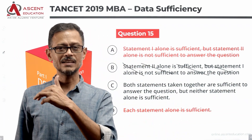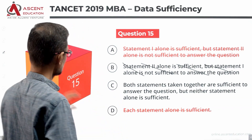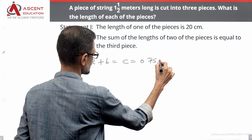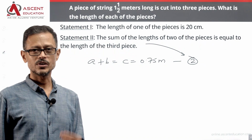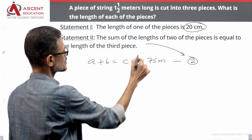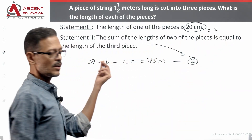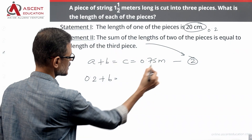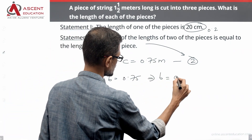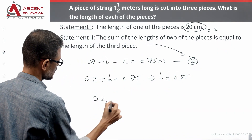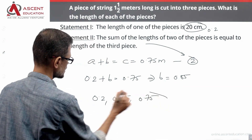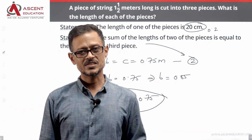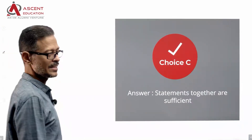Combining both statements: from statement two, C equals 0.75 meters. From statement one, one of the pieces is 0.2 meters — since C is 0.75, A equals 0.2. Therefore B equals 0.75 minus 0.2, which is 0.55. The three lengths are A = 0.2, B = 0.55, C = 0.75. Combining the two statements gives us a unique answer, so choice C is correct.